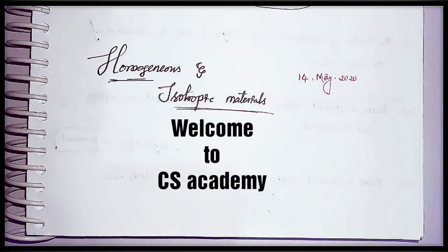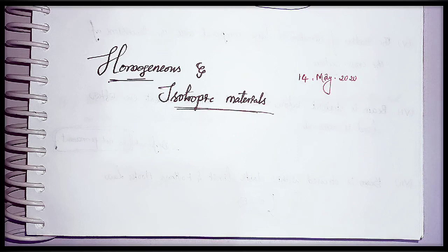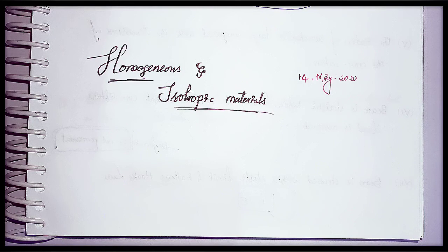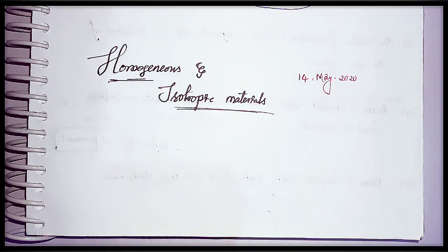Hello students, welcome to CS Academy. In this session we will discuss the most important topic — homogeneous and isotropic materials. This is one of the best assumptions in the theory of simple bending, and many students have doubt about the exact difference between homogeneous and isotropic materials. We will see in this session. Please watch this video till the end and you will get very good information.